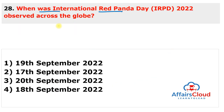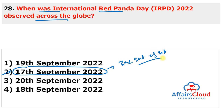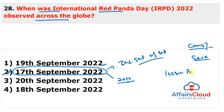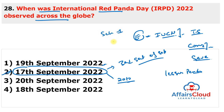International Red Panda Day 2022 was observed on 17th September 2022, as it falls on the third Saturday of September each year. The day creates awareness about conservation of Red Pandas and encourages people to save them. The first International Red Panda Day was observed in 2010. Red Pandas, also known as Lesser Pandas, are listed as Endangered on the IUCN Red List and are included under Schedule 1 of the Indian Wildlife Protection Act of 1972, giving them the highest legal protection.